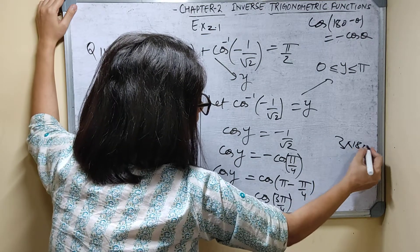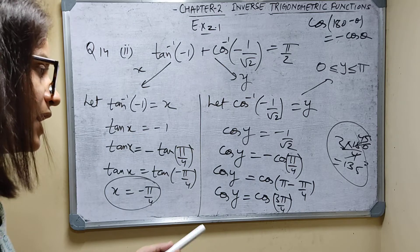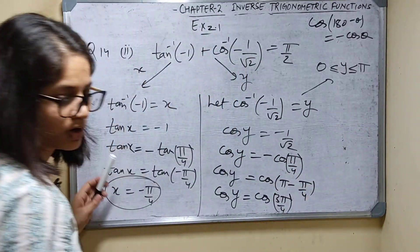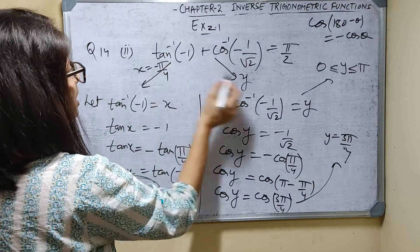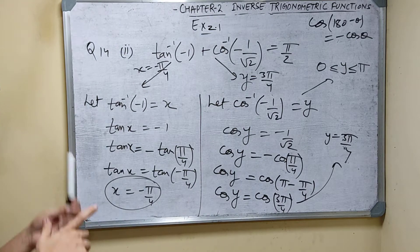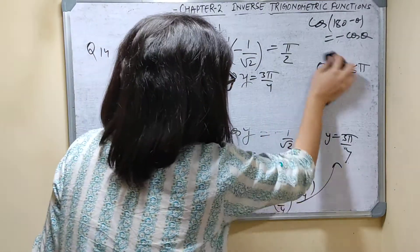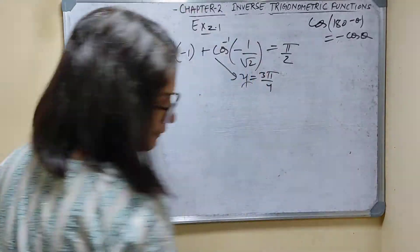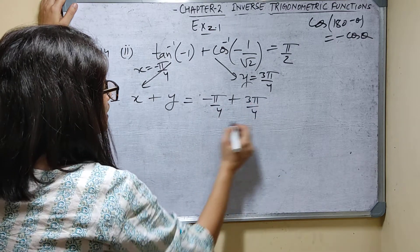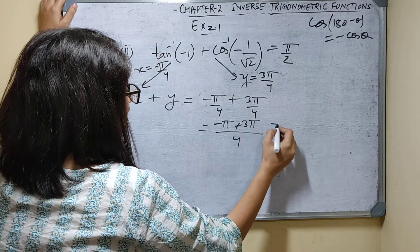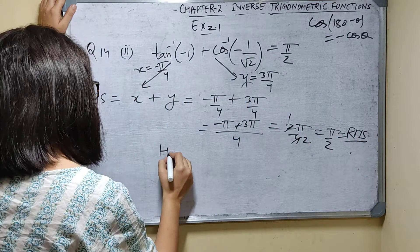Now LHS equals x plus y = minus pi by 4 plus 3 pi by 4 = (minus pi plus 3 pi) by 4 = 2 pi by 4 = pi by 2, which equals RHS. So LHS equals RHS, and it is proved. Like this you have to solve. Question number 14 is over.